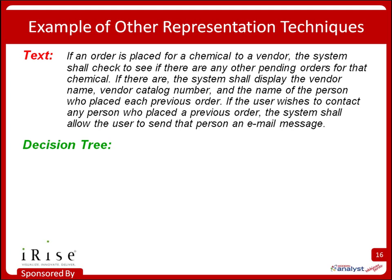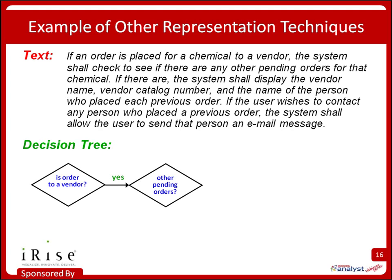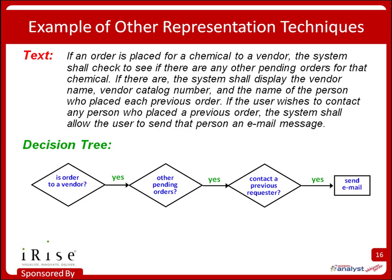Here's an alternative using a decision tree — really just a flowchart. First question: is the order to a vendor? If yes, are there any pending orders? If yes, do you want to contact a previous requester? If yes, send an email. But there are gaps: what if the answer to any of these is no? That requirement did not specify those false outcomes — they're totally implicit. The reader might assume the system does nothing if the answer is no, but that's an assumption forced by incompleteness. I prefer explicit requirements over implicit assumptions.